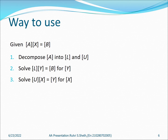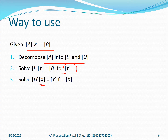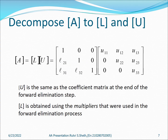This is the entire process for solving the equation. First, given AX = B, we decompose A into L and U. Then we solve LY = B to obtain the value of Y. With Y known, we solve UX = Y by plugging in the values of Y and U to get X.